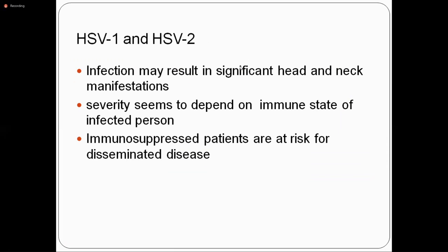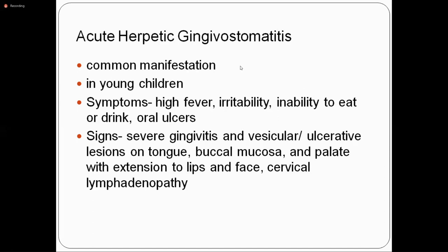HSV type 1 and type 2 can cause problems in the oral cavity. Severity depends on the patient's immunity — if immunocompetent the disease will be mild, whereas in immunocompromised patients it can cause significant problems. Acute herpetic gingivostomatitis is due to HSV type 1 predominantly when occurring in the oral cavity. It is a very common manifestation and is seen in young children — typically in preschools where sanitary facilities are poor and children are overcrowded.